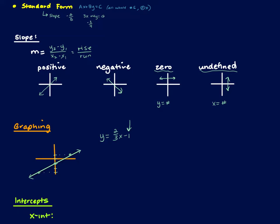If it was x equals negative 2, I'm going to go to negative 2 and plot a vertical line. And if it was y equals 3, I'm going to go to positive 3 and plot a horizontal line.